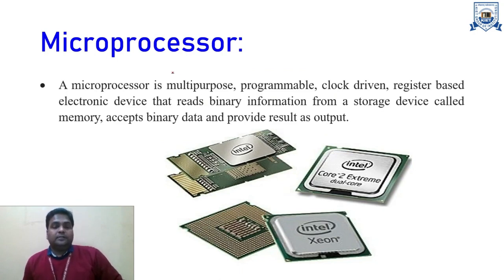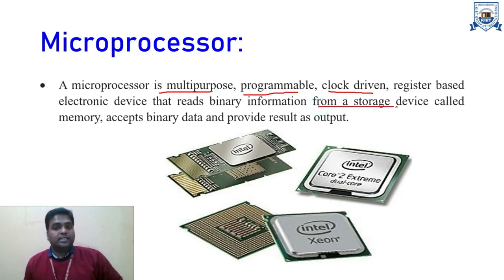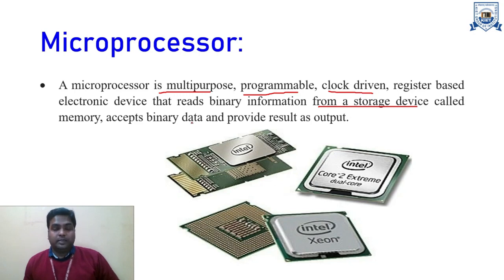A microprocessor is a multipurpose, programmable, clock-driven, and register-based electronic device that reads binary information from a storage device such as memory, accepts binary data, and provides results as output. In a CPU, we have a motherboard, and on the motherboard we have a single microprocessor chip where the arithmetic and logic unit and control unit are available. Our desktops and laptops are the best examples of microprocessor-based systems.